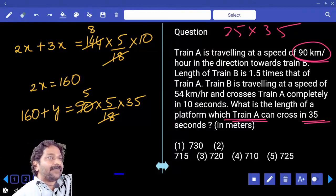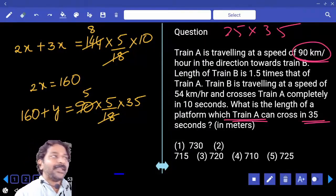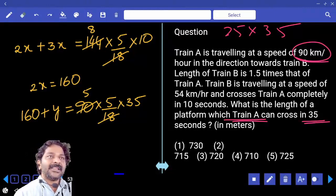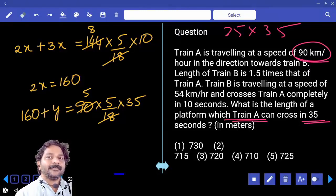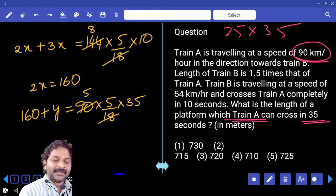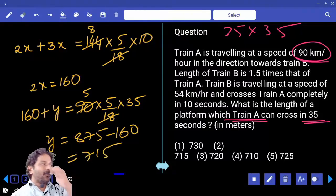A minus b into a plus b, a square minus b square. 30 square minus 5 square, 30 square, 5 square difference, 875. Then y value is equal to 875 minus 160, answer 715.